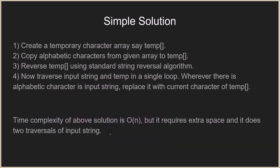The simple solution to this problem is to create a temporary character array called 'temp'. We copy only the alphabetic characters from the given array into this temporary array — not the special characters. We then reverse the temp array using the standard string reversal algorithm, so the positions of the alphabets in temp are now reversed compared to their positions in the original string. Next, we traverse the input string and the temp array together in a single loop. Whenever we find an alphabetic character in the input string, we replace it with the current character from the temp array.